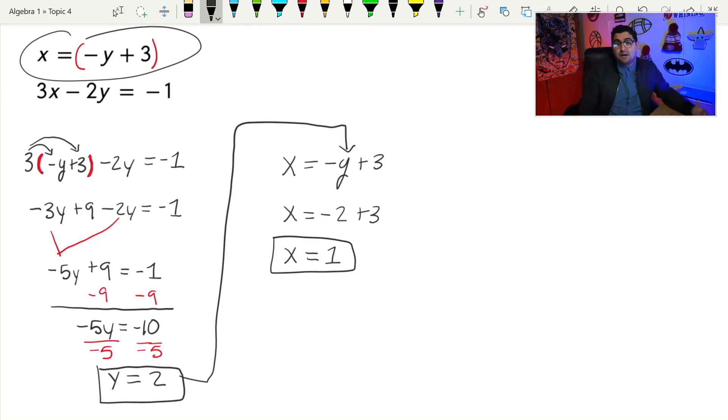So again, we write our answers as an ordered pair. So I'm going to go ahead and write parentheses one comma two. And that's my answer. This would be the point where these lines cross, a point that's on both of those lines. Hence my solution to this system of equations.